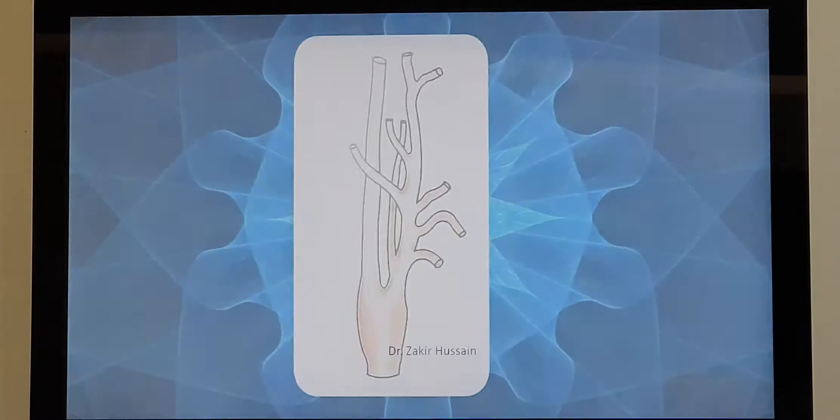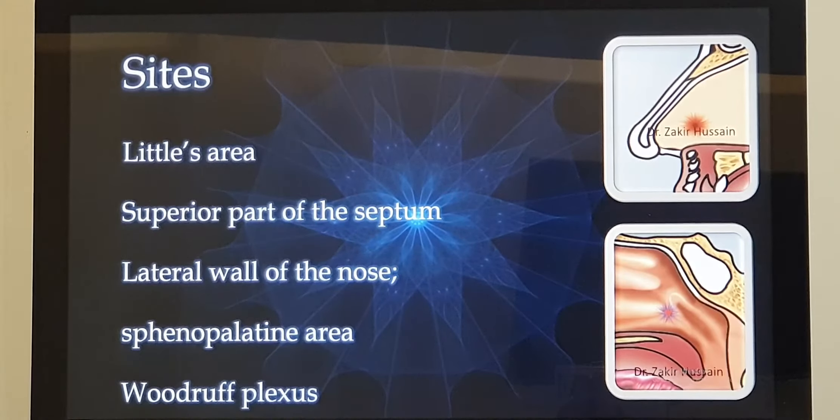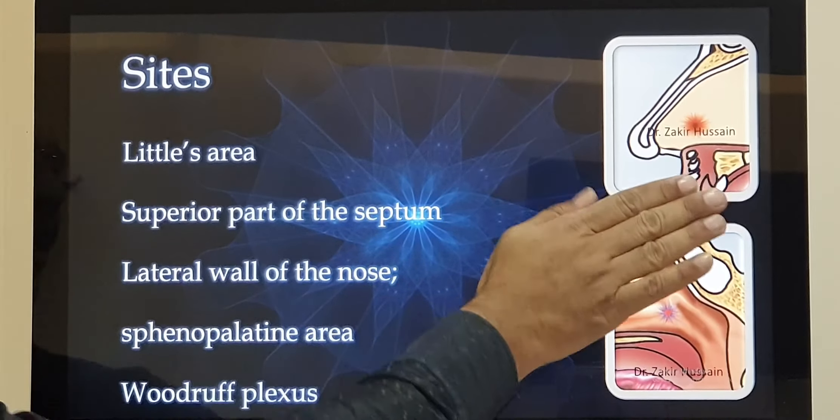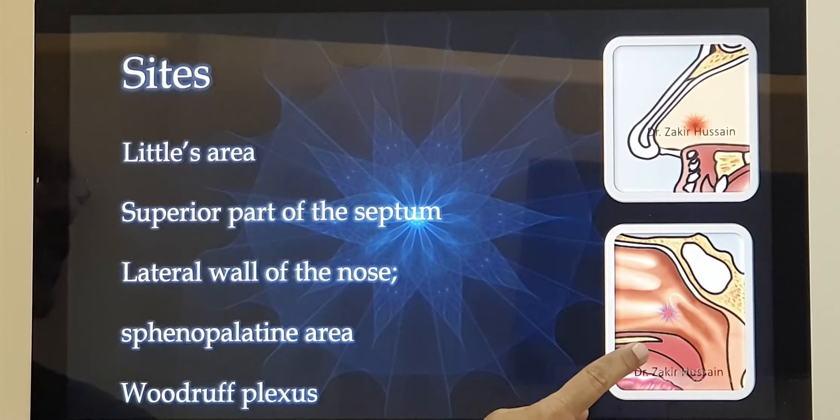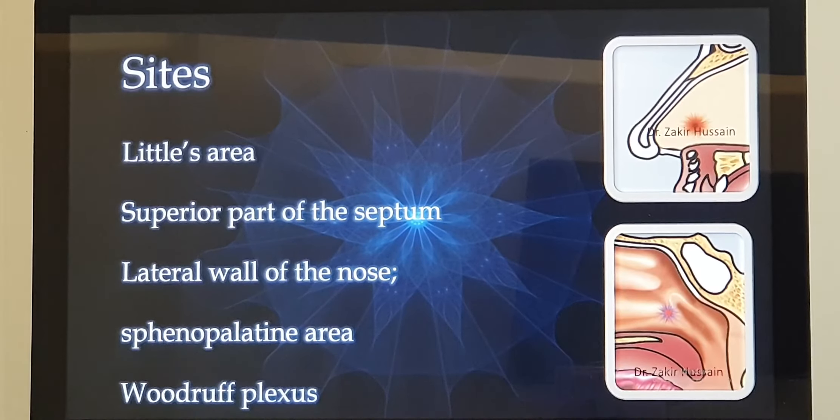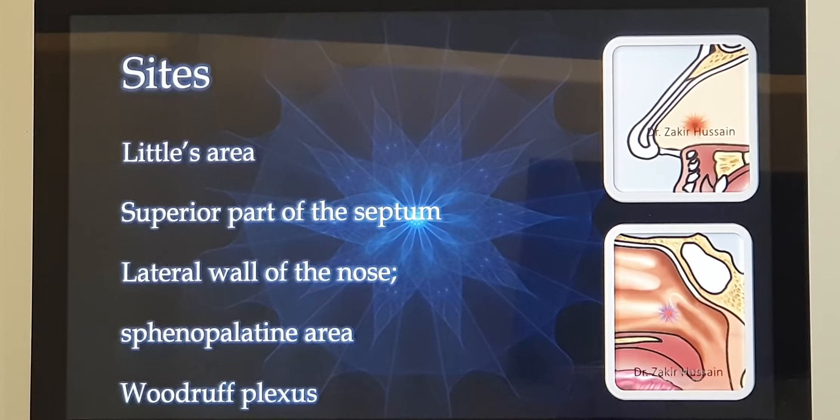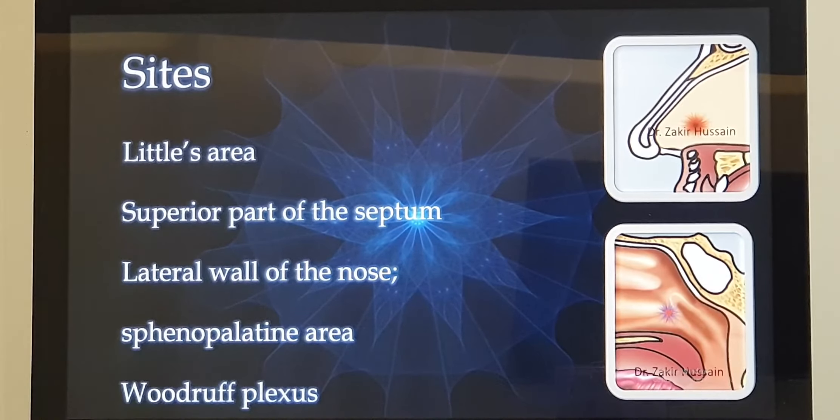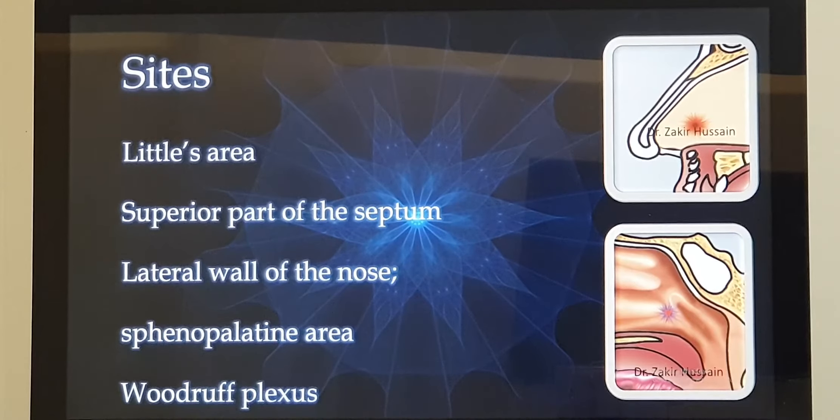Now you have seen the blood supply of the nose. Now the common sites of nasal bleed. One is the Little's area, which I have already mentioned. Second one will be the septum, in the upper part, the ethmoidal area. Then posteriorly, as you see in this picture, just above this blue mark, this is the sphenopalatine area and the blue mark here, which is posterior to the inferior turbinate. Why I have marked blue? Because it is a venous plexus, rest everything, they are all arterial plexus. And this is termed as Woodruff's plexus. So these are the common sites of nasal bleed.